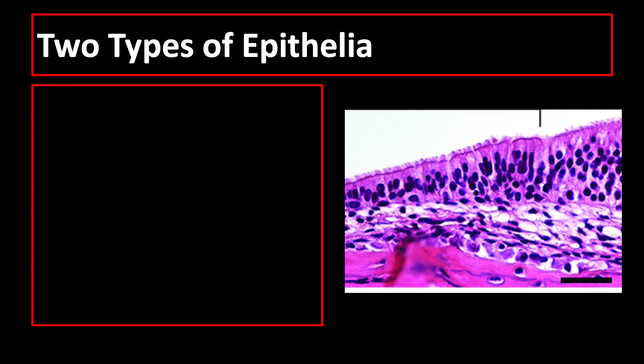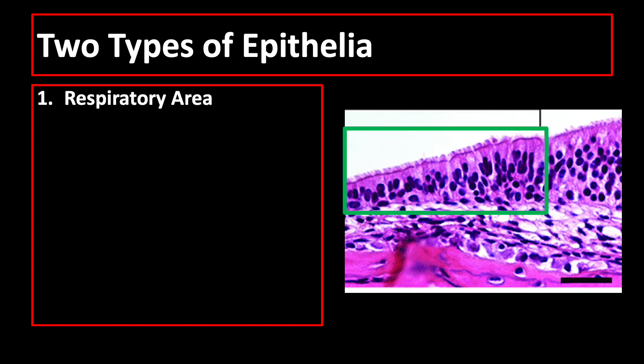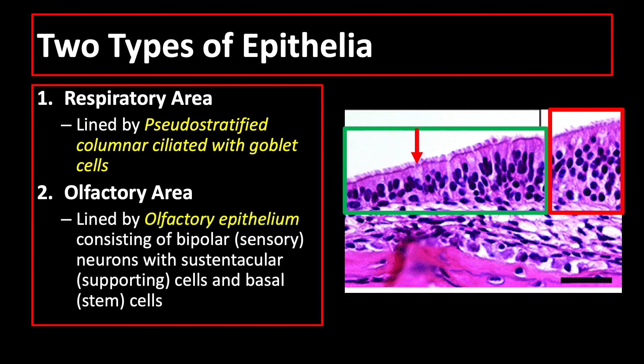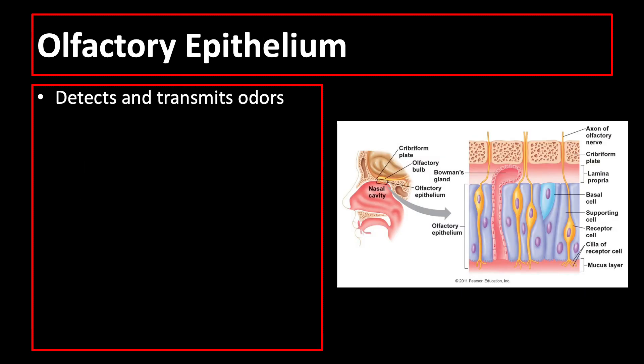There are two types of epithelium in the nasal cavity. The respiratory area is lined by pseudostratified ciliated epithelium with goblet cells, while the olfactory area is lined by olfactory epithelium consisting of bipolar neurons with sustentacular cells and basal cells. The olfactory chemoreceptors for the sense of smell are located in the olfactory epithelium, a specialized region of the mucous membrane covering the superior conchae at the roof of the nasal cavity.